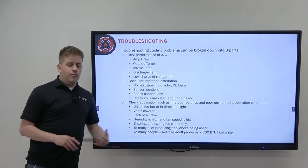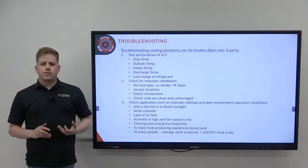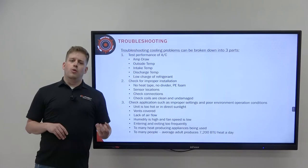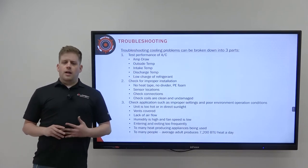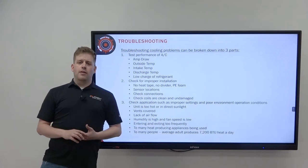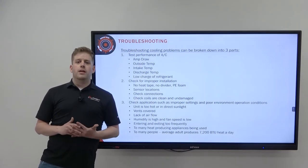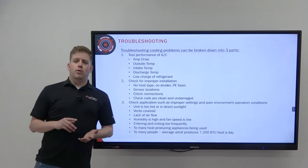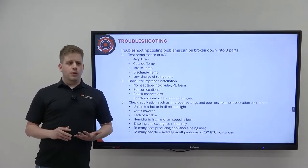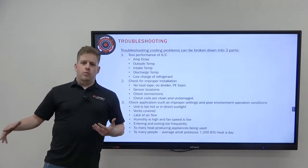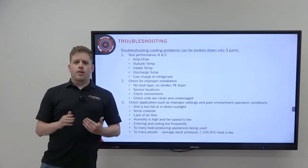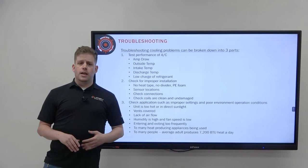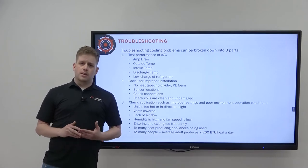If humidity is too high and fan speed is too low, the air conditioner's first responsibility is to remove water from the air. As humidity increases, the air conditioner must work harder to remove that moisture. If fan speed isn't high enough, it cannot remove humidity effectively, reducing performance. Entering and exiting the RV can also cause heat and humidity gain — every time the door opens, heat and humidity enter. If you're entering and exiting every few minutes, you're introducing more heat and humidity the air conditioner must overcome.